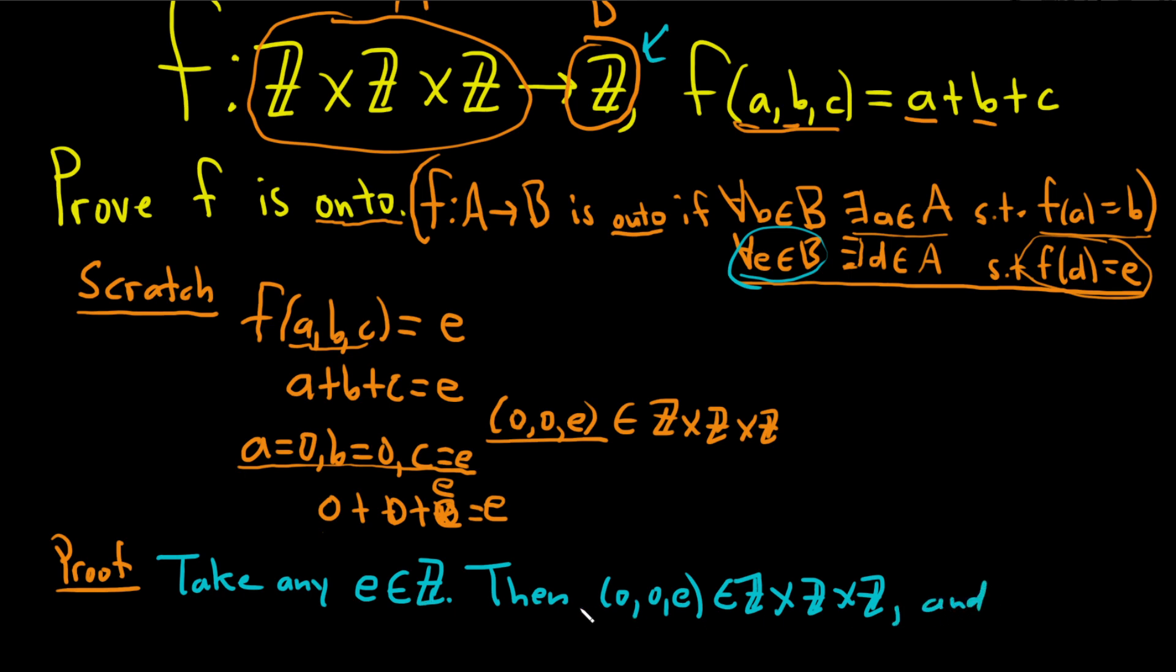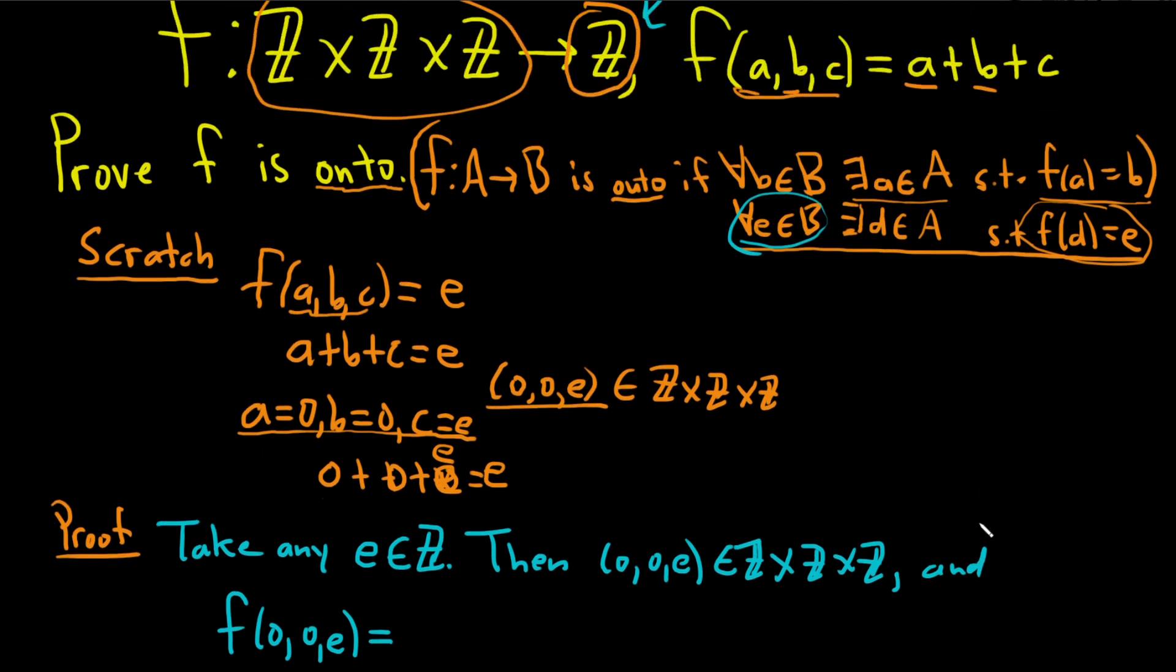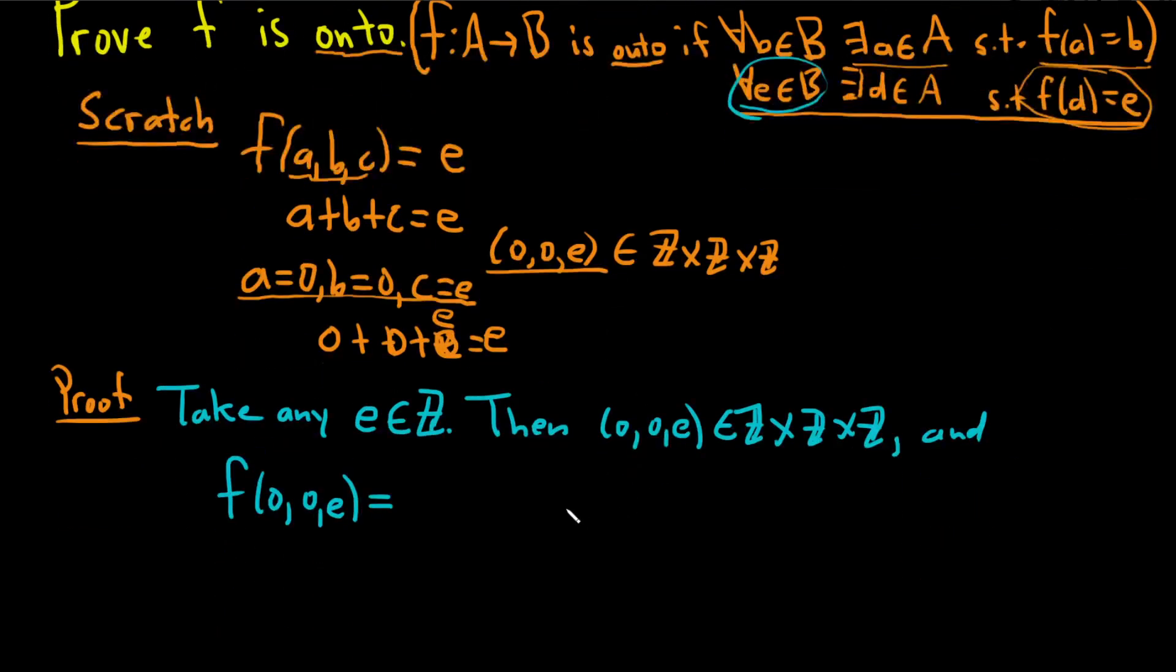And now we just need to look at F of this element, so F of 0, 0, E. Well, if you recall, F just adds up the elements, right? It's A plus B plus C. So this will just be 0 plus 0 plus E. Well, that's just equal to E.